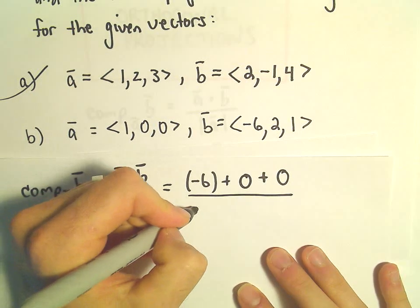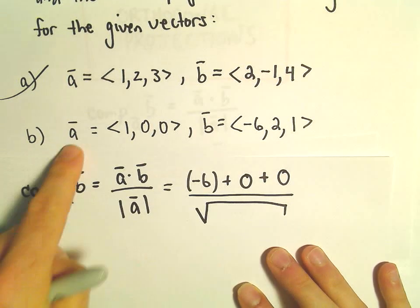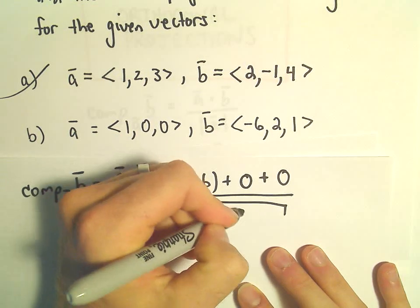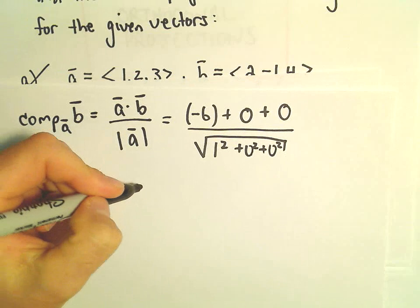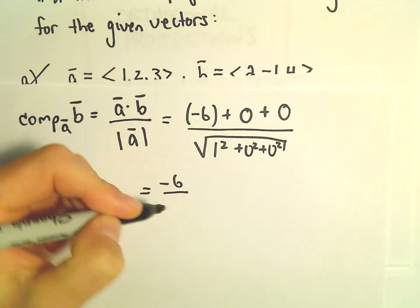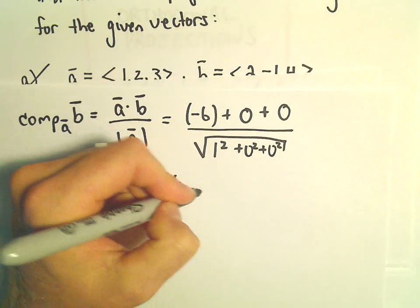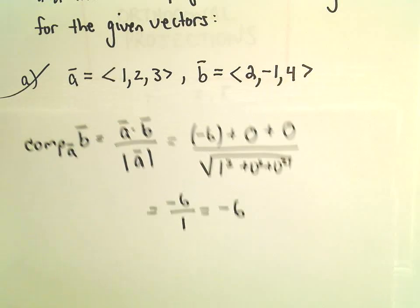If we take the magnitude of vector A, we'll do 1 squared plus 0 squared plus 0 squared. So that's simply going to leave us with negative 6 over 1, or a value of negative 6.